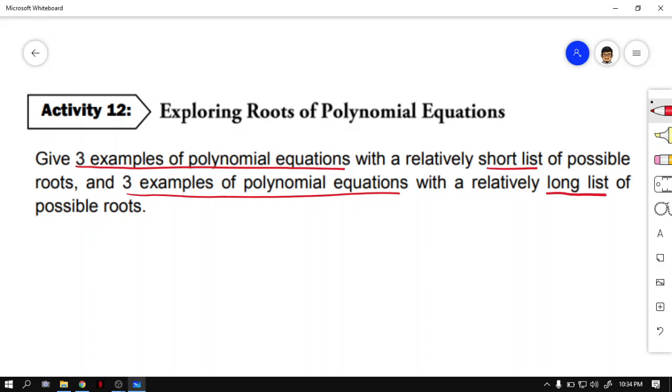The constant is positive 2. And the factors of positive 2 are positive and negative 1, positive and negative 2. Yun lang. Parang ganon.